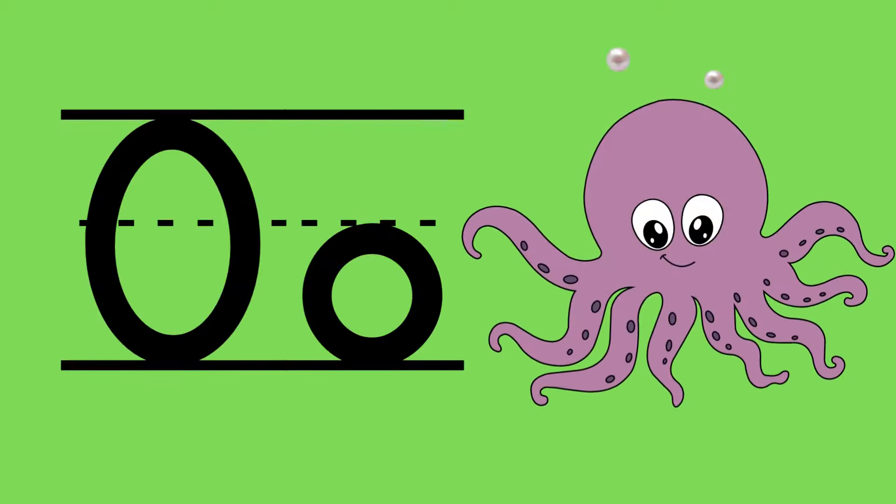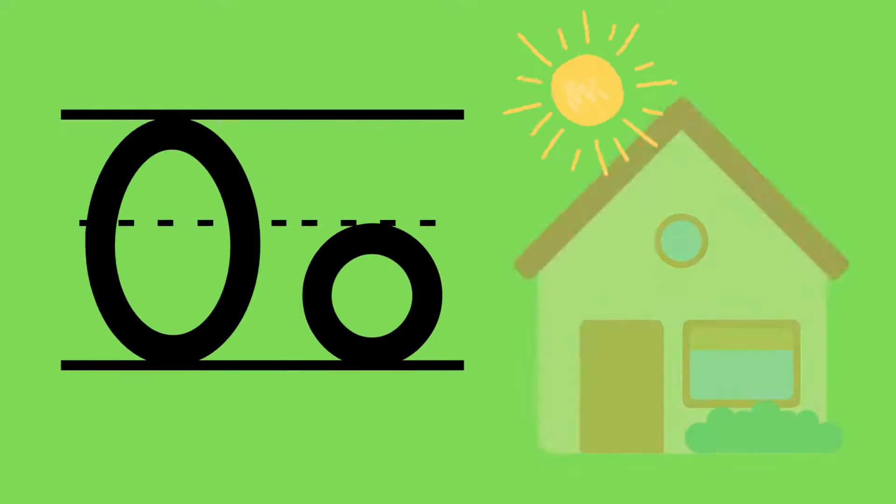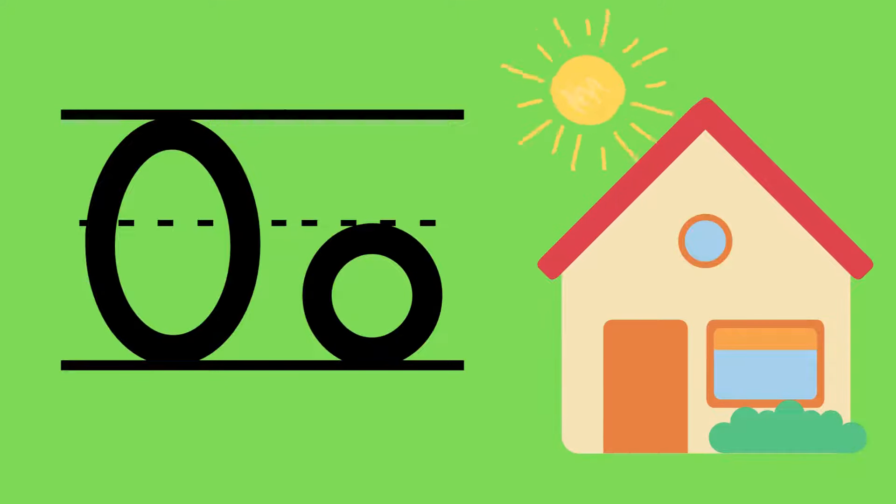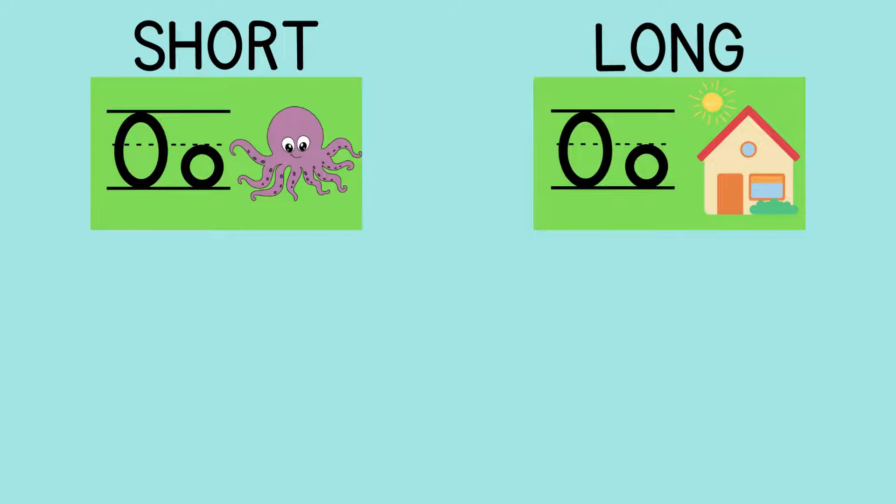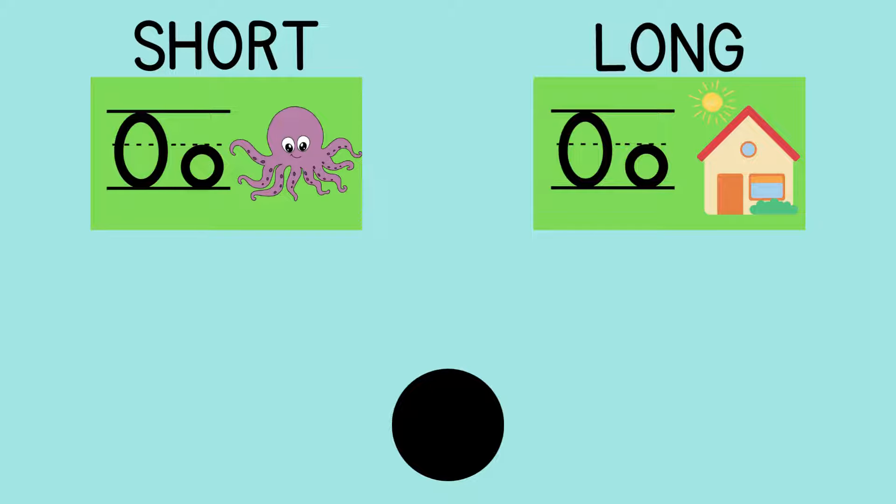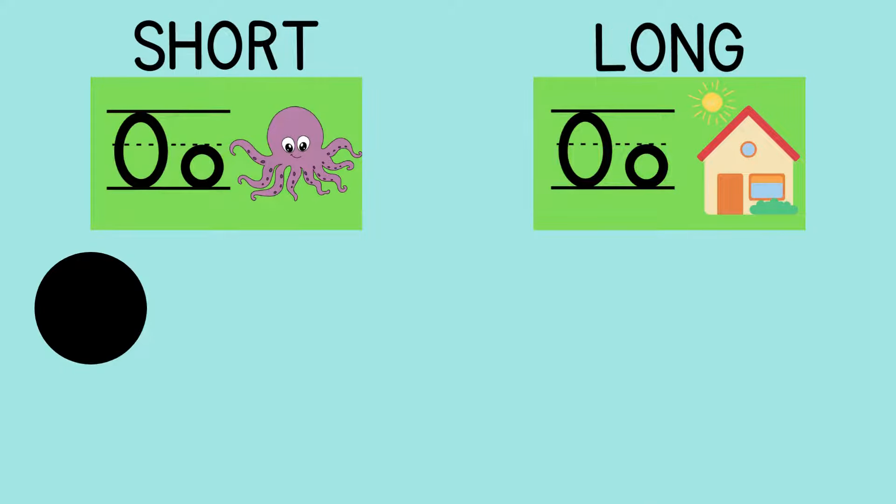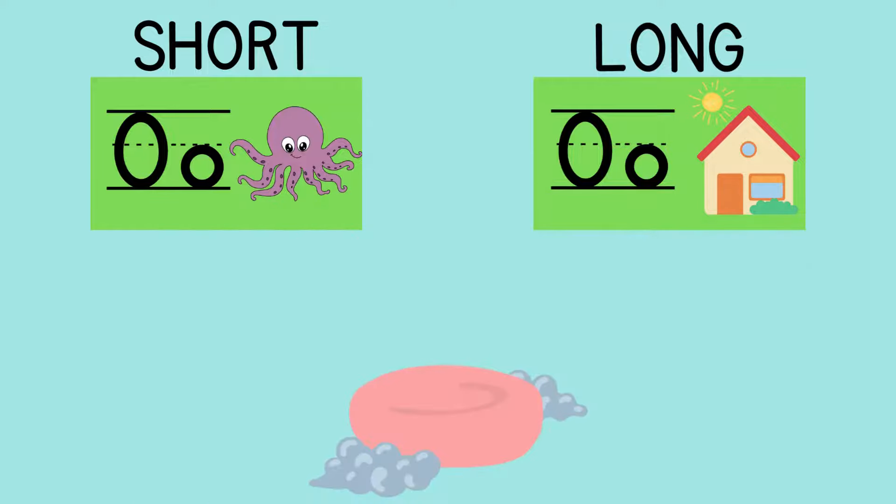Let's look at short and long O. Remember, short O is 'o' as in octopus, and long O is 'ō' as in home. Let's do some sorting. First up, dot - I hear 'o', that's the short sound. Dot.